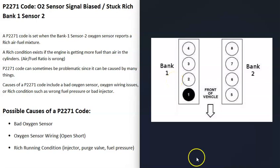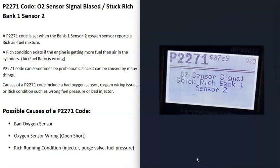One thing to note about a P2271 code is that if the engine is running rich, that can sometimes be hard to troubleshoot because it can be caused by many different things. Keep in mind that the P2271 code can be difficult to diagnose.